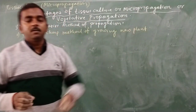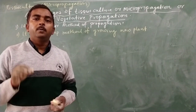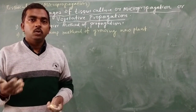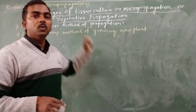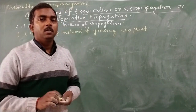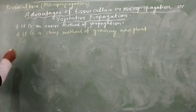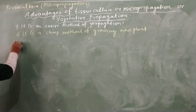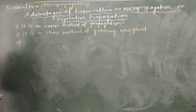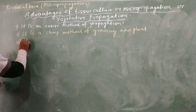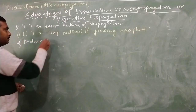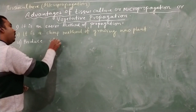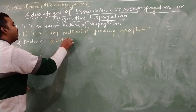From a single plant, if we require to grow more than one plant, vegetative propagation provides a cheap method to do so. There is very little expenditure involved in vegetative propagation. The next advantage is the production of identical offspring.